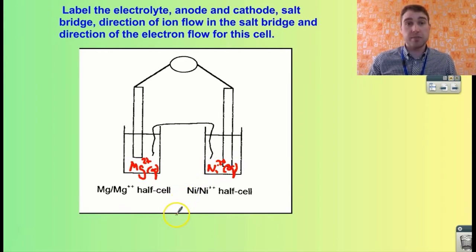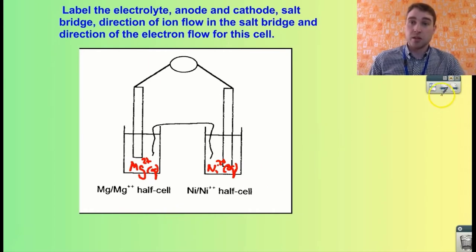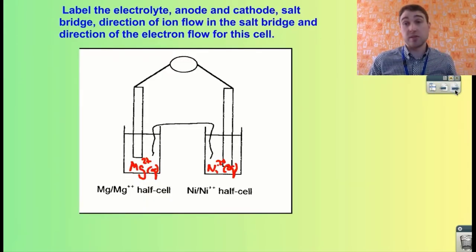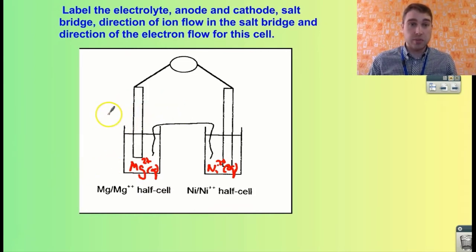Okay, so we've labeled the electrolyte. Now we need to determine which side is anode and which side is cathode. If we go back to our activity series, magnesium is more active than nickel. So the more active metal is the metal that is oxidized, and the anode is the electrode where oxidation occurs. So our magnesium side here is going to be our anode.